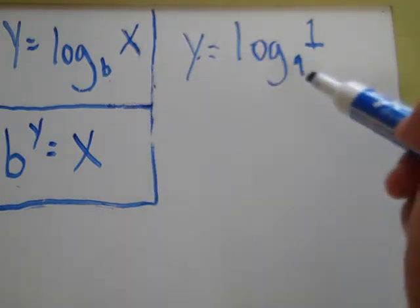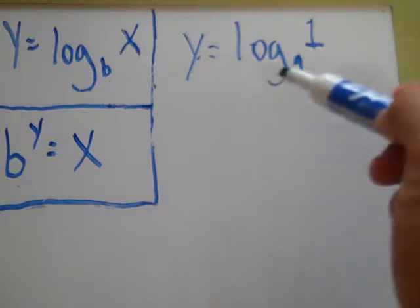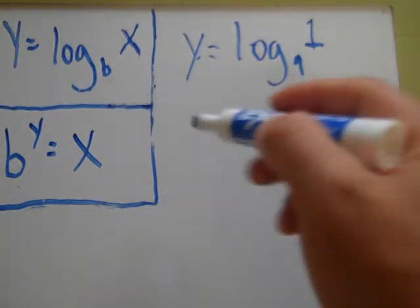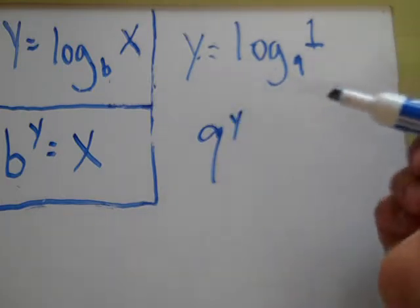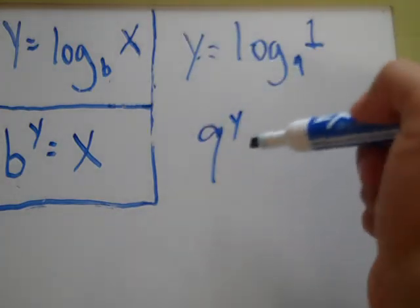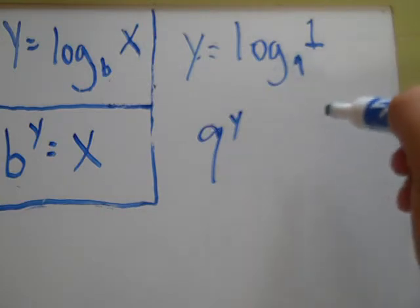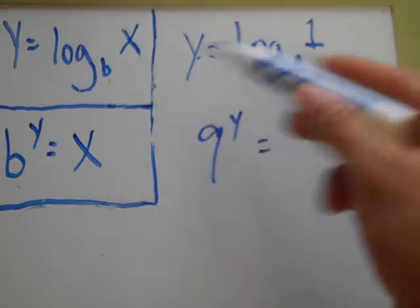If we know that everything's in its proper place, 9 is our base, then we come down here and put 9. Y is our exponent. We don't know what the exponent is yet, so we put y as our exponent equals 1.